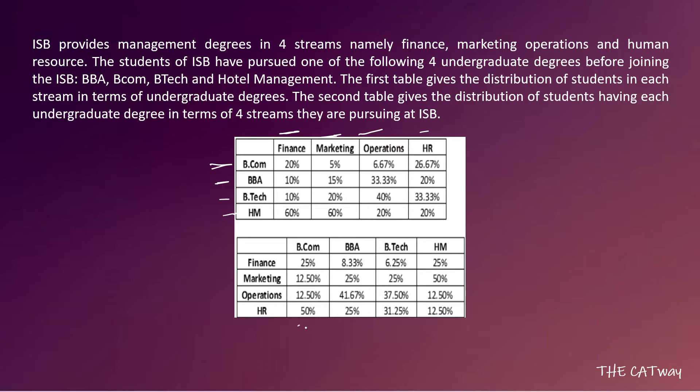The second table gives the distribution of students having an undergraduate degree in terms of the four streams they are pursuing. From BCom, 25% are studying Finance, 12.5% Marketing, 12.5% Operations, and 50% HR. For BBA: 8.33% Finance, 25% Marketing, 41.67% Operations, and 25% HR. Similarly for BTech and Hotel Management.